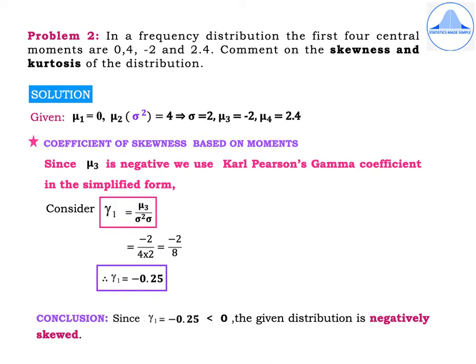Problem 2. In a frequency distribution, the first four central moments are 0, 4, −2, and 2.4. Comment on the skewness and kurtosis. Given: μ1=0, μ2=σ²=4 so σ=2, μ3=−2, and μ4=2.4. Since μ3 is negative, we will use Carl Pearson's γ coefficient in the simplified form, as explained in the previous video.